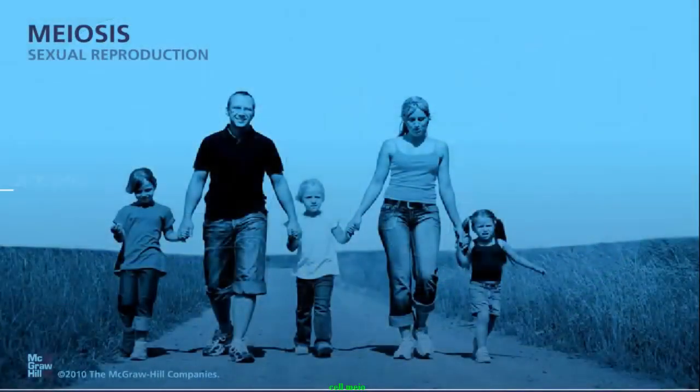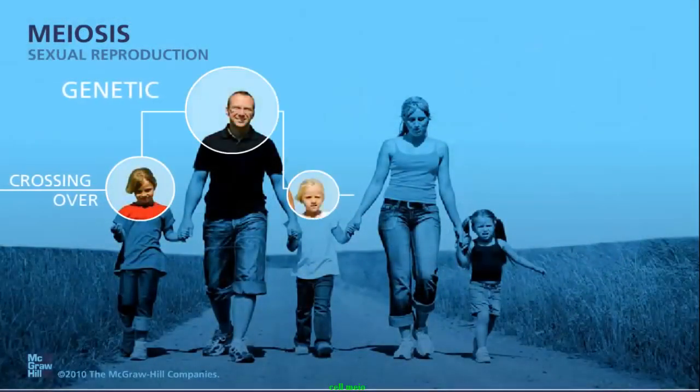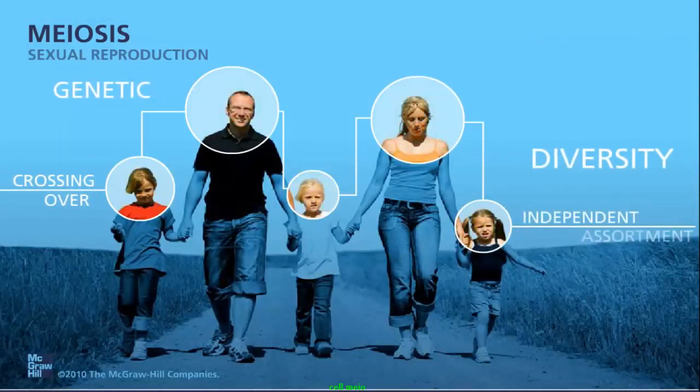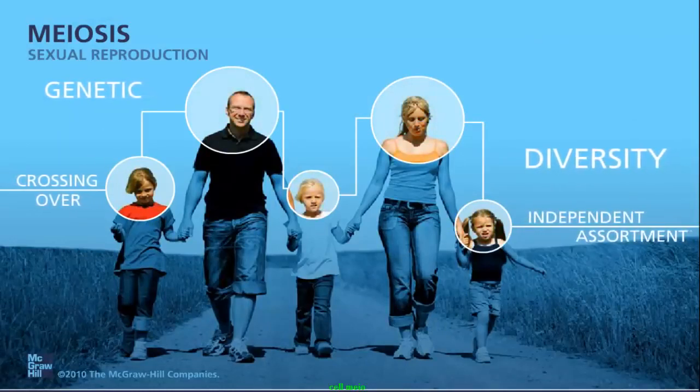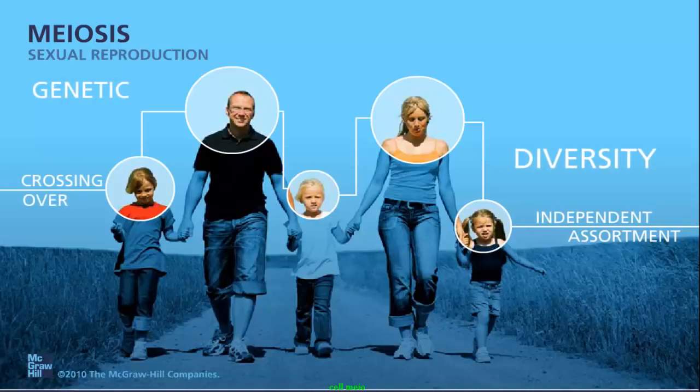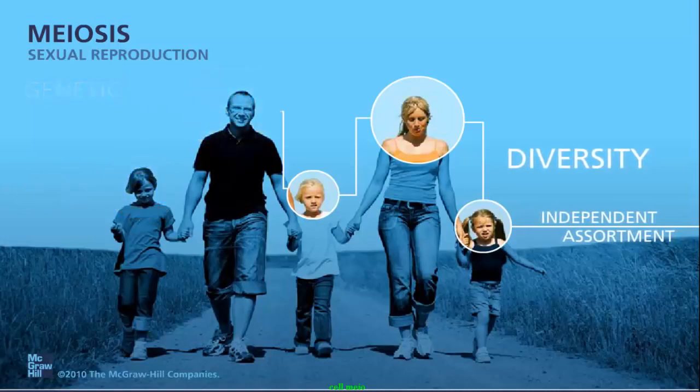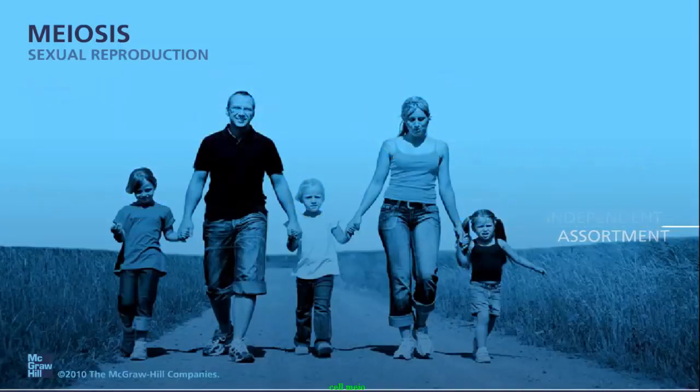The combination of independent assortment, crossing over, and the random pairing of gametes during sexual reproduction increases genetic diversity, and explains why a child will not look exactly like his or her parents or siblings.